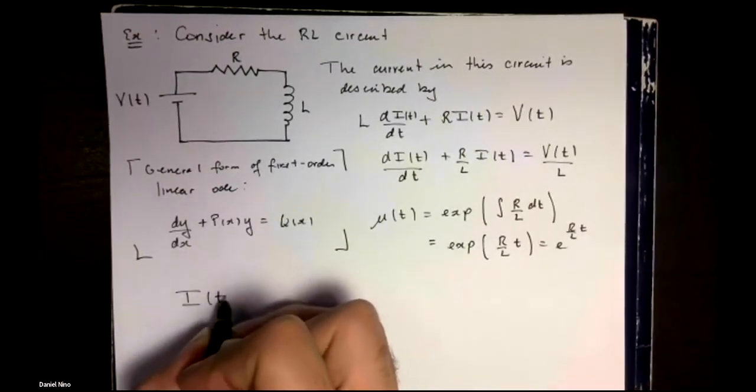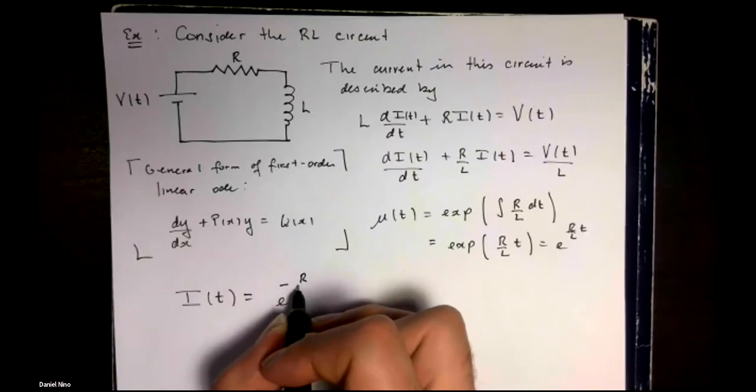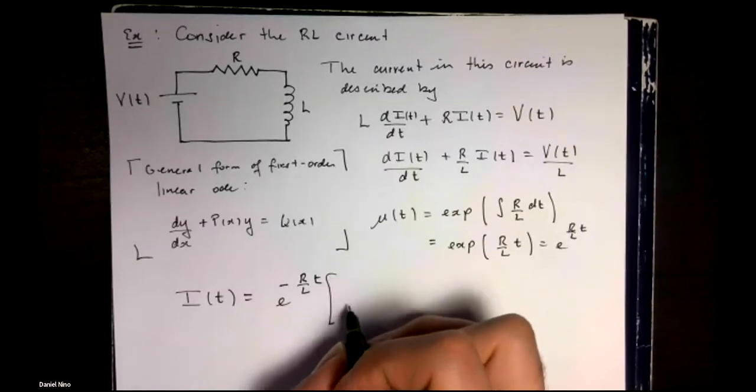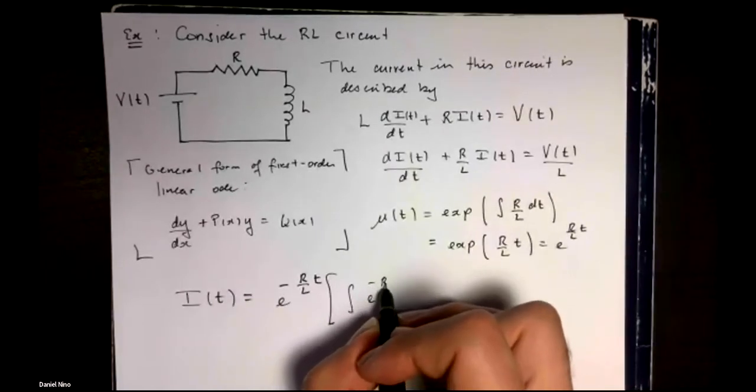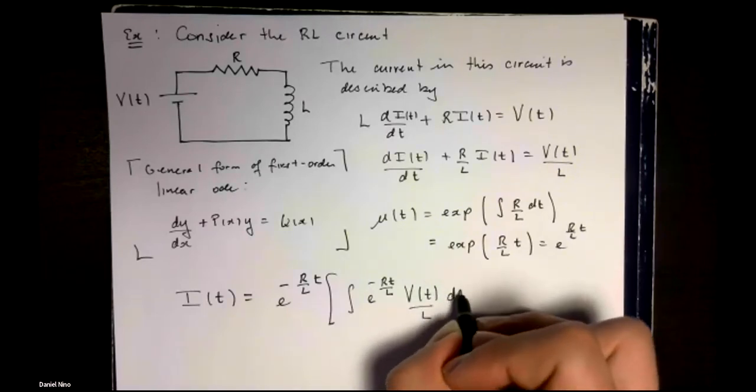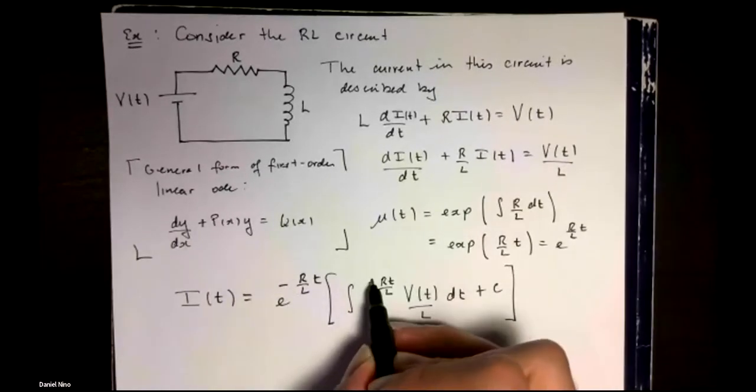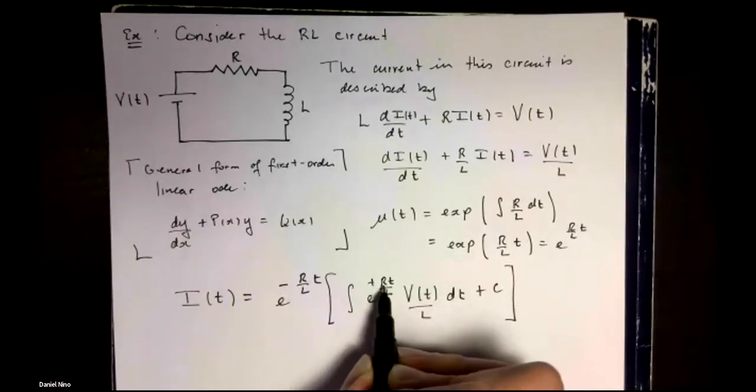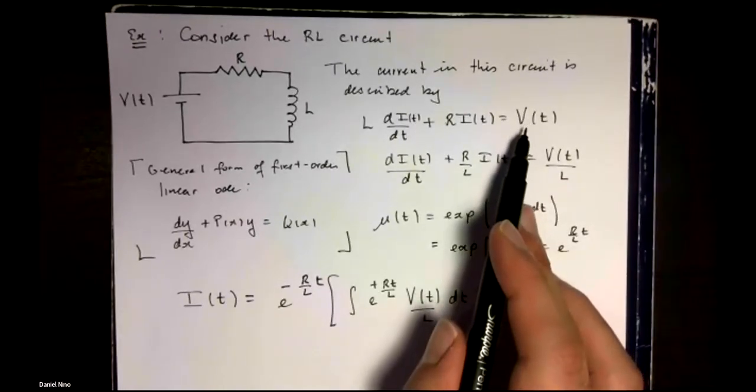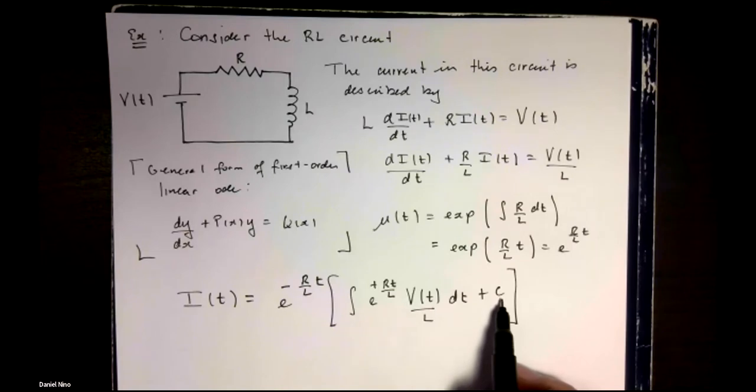Then we can immediately write out the general solution based on what we showed in the last video plus a constant. So this is one over the integrating factor. This is our integrating factor is this is positive. And this is integrated with respect to whatever term is on the right hand side. And this case is V(t) over L. And we have to add an integration constant to that.